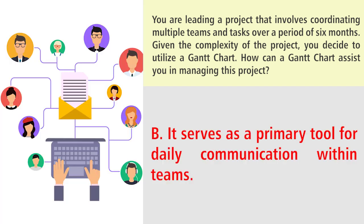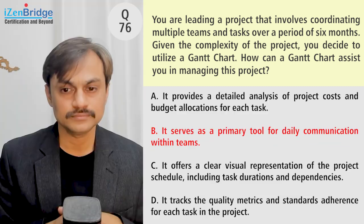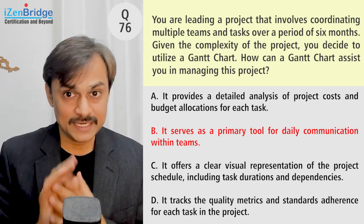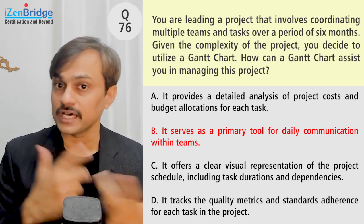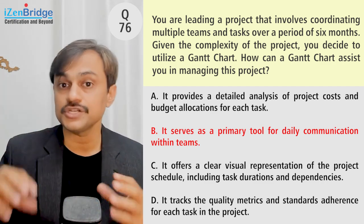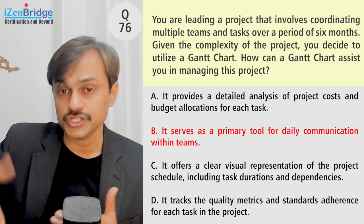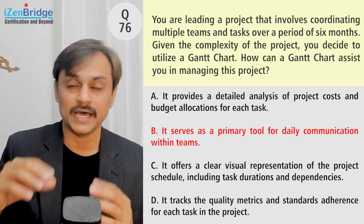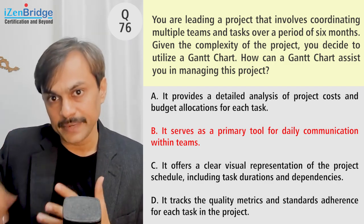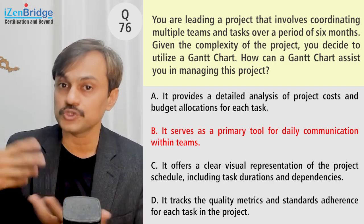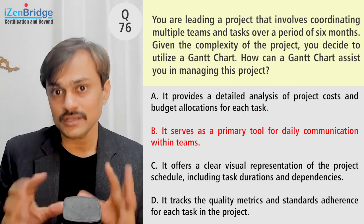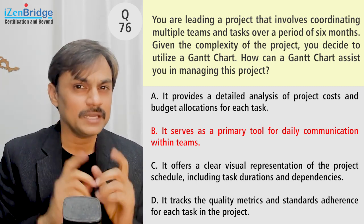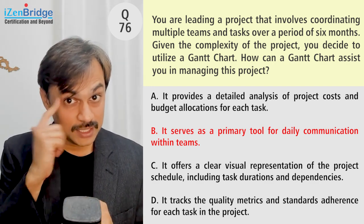Option B: it serves as a primary tool for daily communication within the team. We can use it for daily communication, but in many organizations Gantt charts are not that detailed — especially in the planning stage they have an additional breakup of activities to help people find their daily tasks. It is a candidate option, but the keyword 'primary tool' is concerning, and I need to see if there's a better option.